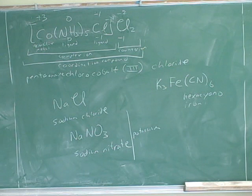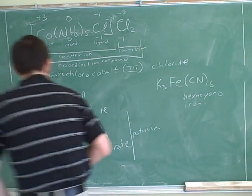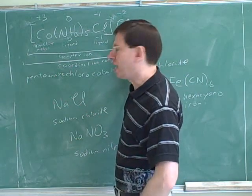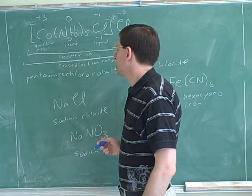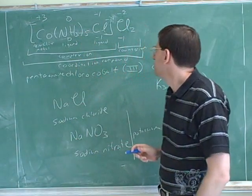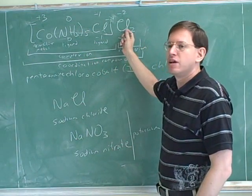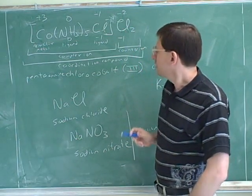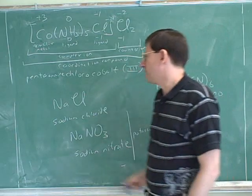Well, we don't bother with the numerical prefixes for the counter ions. We only need numerical prefixes for the ligands. Let's go back to this case. Notice that we said pentaamine, but we didn't say dichloride. Why not? We only need the numerical prefixes for the ligands inside the brackets. We don't need numerical prefixes for the simple counter ions.